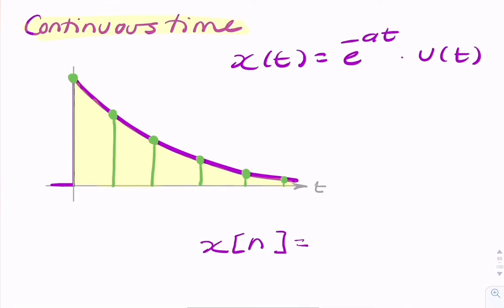So this time between samples is Ts. And Ts is the reciprocal of the sampling rate — so 1 over the sample rate.